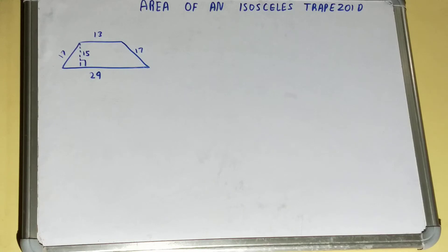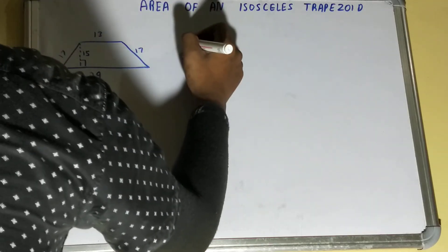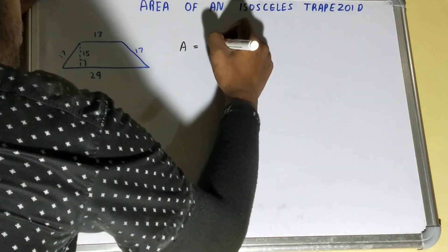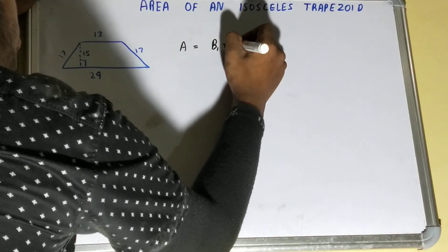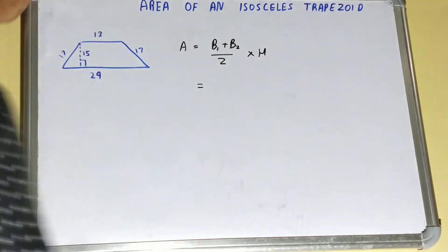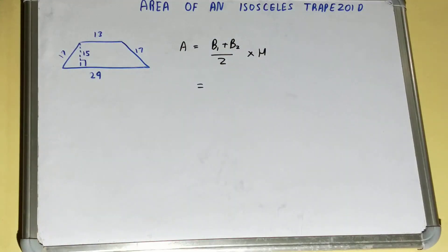So let's start with the formula first. The formula for finding the area is: base 1 plus base 2, divided by 2, times your height. So this is the formula for finding the area of an isosceles trapezoid.